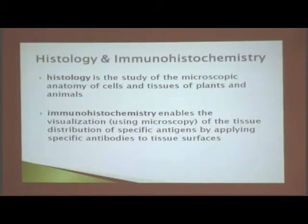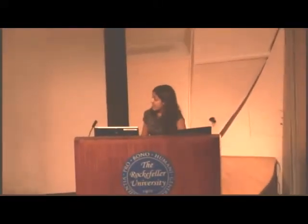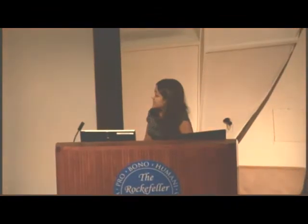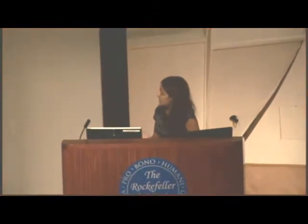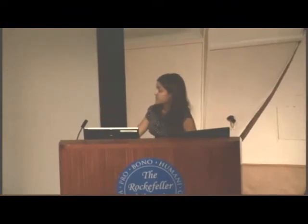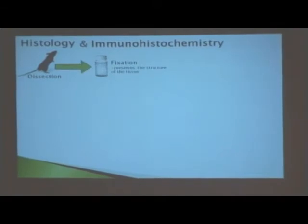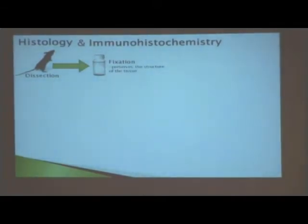Histology is the study of microscopic anatomy of cells and tissues of plants and animals, and immunohistochemistry allows you to see the antigen distribution in tissues by applying specific antibodies to tissue surfaces. The procedures of histology and immunohistochemistry begin with dissection — usually for rats, that's what we use in our lab. Then we use fixation, which is a chemical that preserves the structure of the tissue and creates a web-like structure on top of the tissue to preserve the molecular structure.